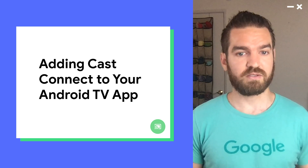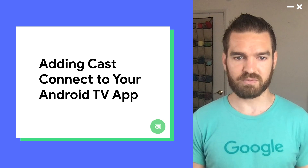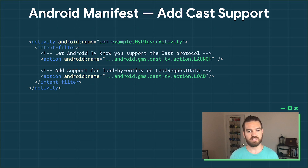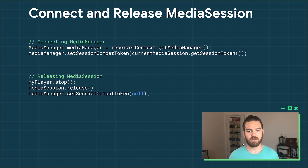Now that we have the setup complete on the senders, let's dive into what's needed to add Cast Connect to your Android TV app. First, you'll need to add the launch and load actions to your Android manifest. The launch action lets Android TV know that you support the Cast protocol, and you'll want to put this action in the first activity that you want to load when a session is first launched, such as your app home screen. The load action is required so that your Android TV app is able to handle load requests coming from your senders, and is usually handled in your player activity or another activity used to handle deep links. When you create a media session, you'll need to specify the current media session token to the media manager so it knows where to send commands and get the media status. When you release the media session due to inactive playback, you should set a null token to the media manager.